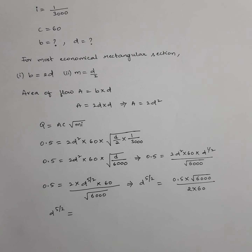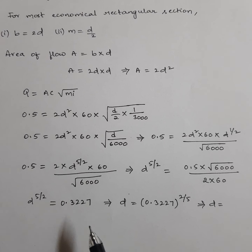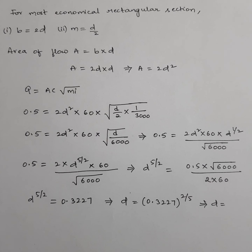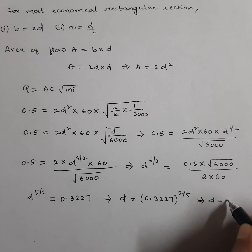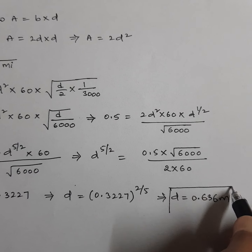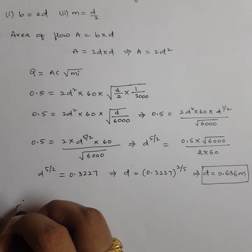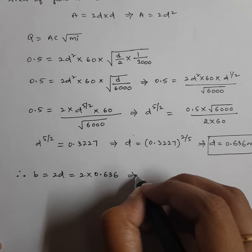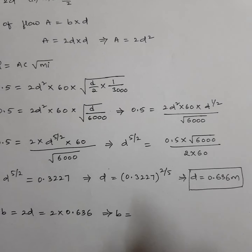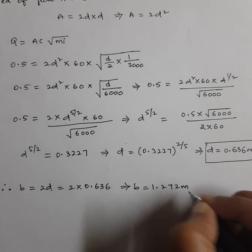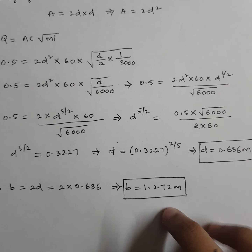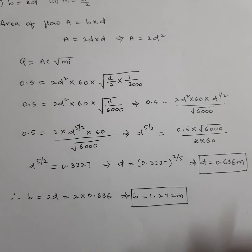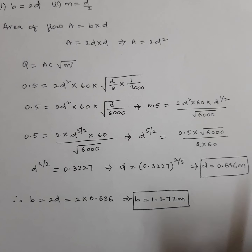I got D^(5/2) as 0.3227. From here D equals 0.3227 to the power of 2/5, which gives D equals 0.636 meters. That is the depth of flow. Now I can calculate width: B equals 2D equals 2 into 0.636 equals 1.272 meters. Therefore, width of channel is 1.272 meters and depth of flow is 0.636 meters.